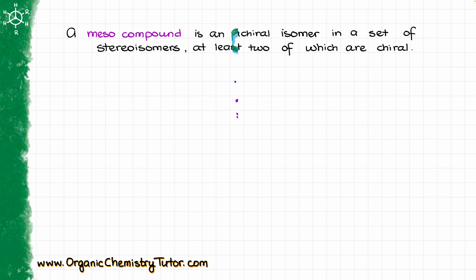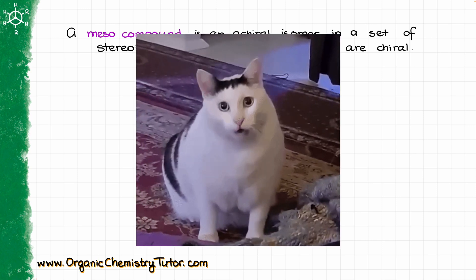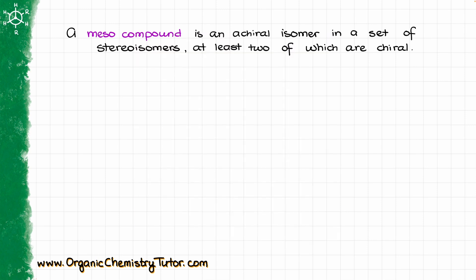So to start with, the official definition of a meso compound is: a meso compound is an achiral isomer in a set of stereoisomers, at least two of which are chiral. It's quite a mouthful.